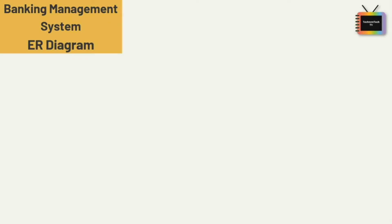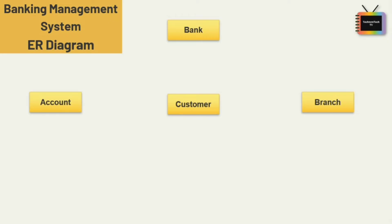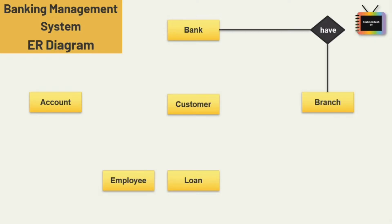Here I'm taking only six entities: bank, branch, customer, account, employee, and loan. Now let's define the relationships between them. First, let's see the relationship between bank and branch. A bank can have different branches, so I am adding a 'have' relationship between bank and branch. Next, the relationship between bank and customer will be 'bank has a customer.'